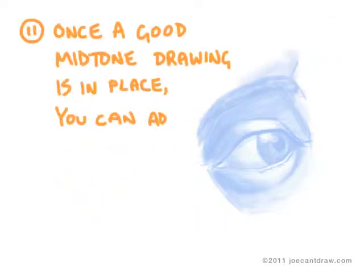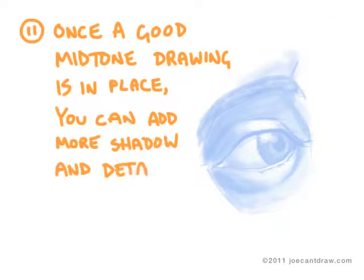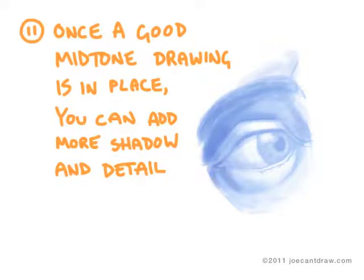Once you have a good mid-tone drawing in place, you can easily add more shadow and detail. You can start stitching in those individual eyebrows and eyelashes, and you can start enhancing the contrast and detail of your drawing overall.